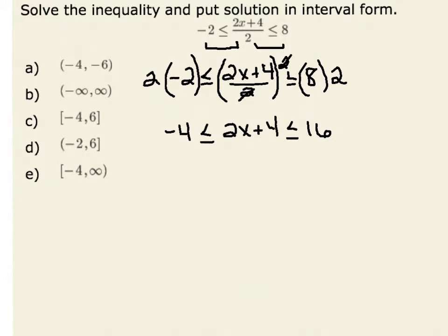Now, to isolate x, I will subtract 4 from both inequalities. Negative 4 minus 4 is negative 8. That is less than or equal to 2x, which is less than or equal to 16 minus 4, which is 12.